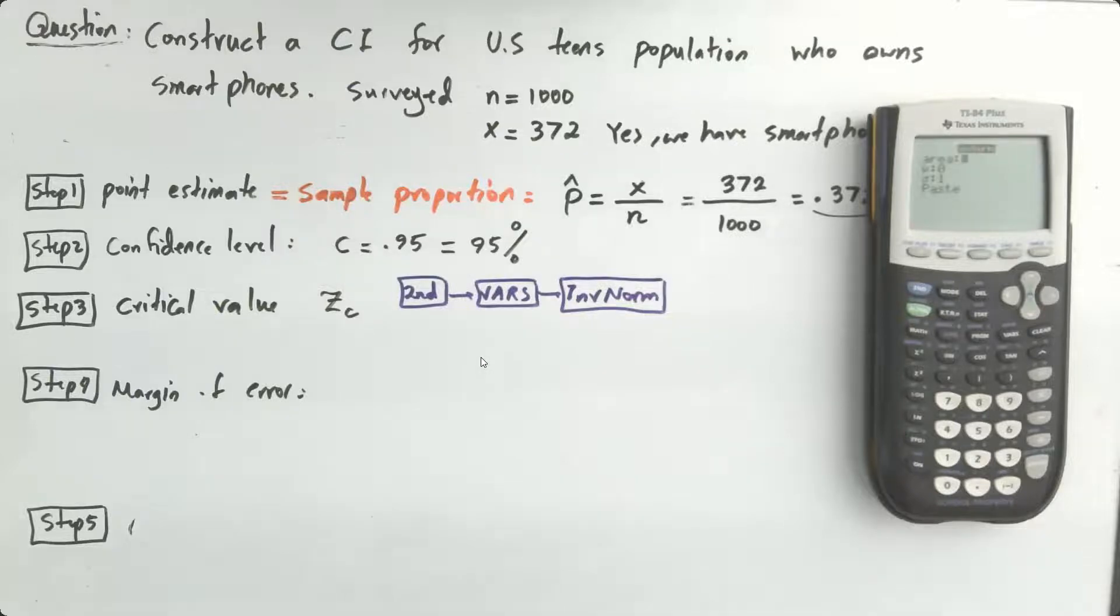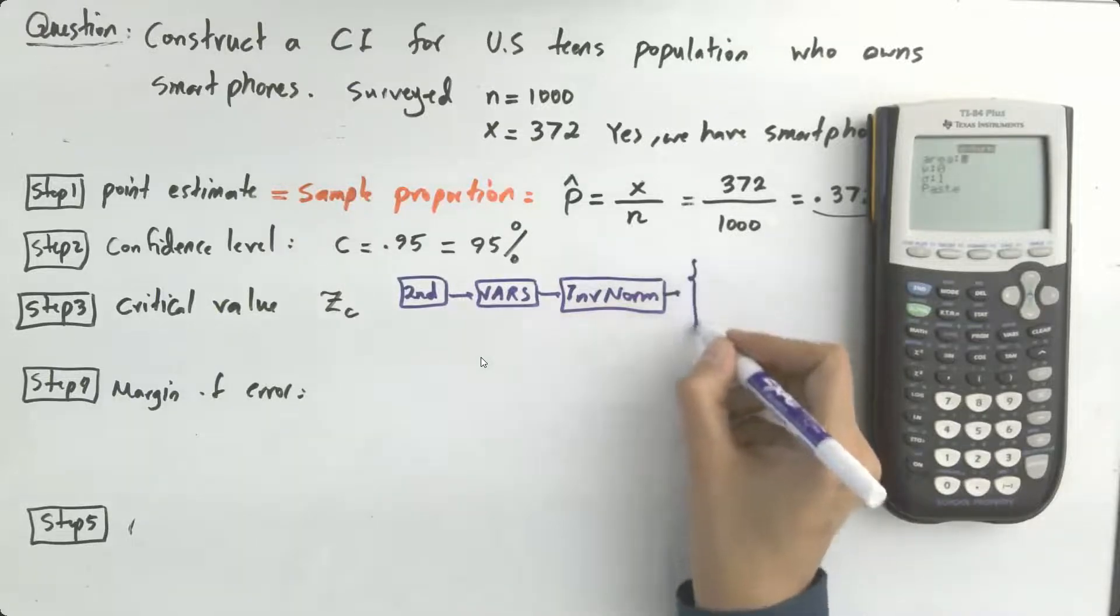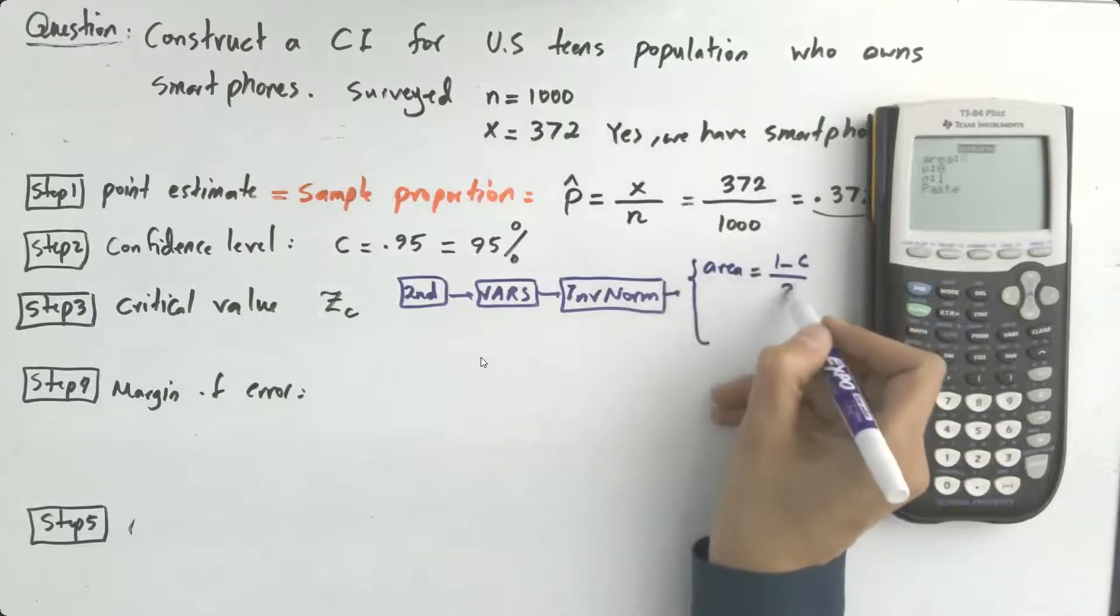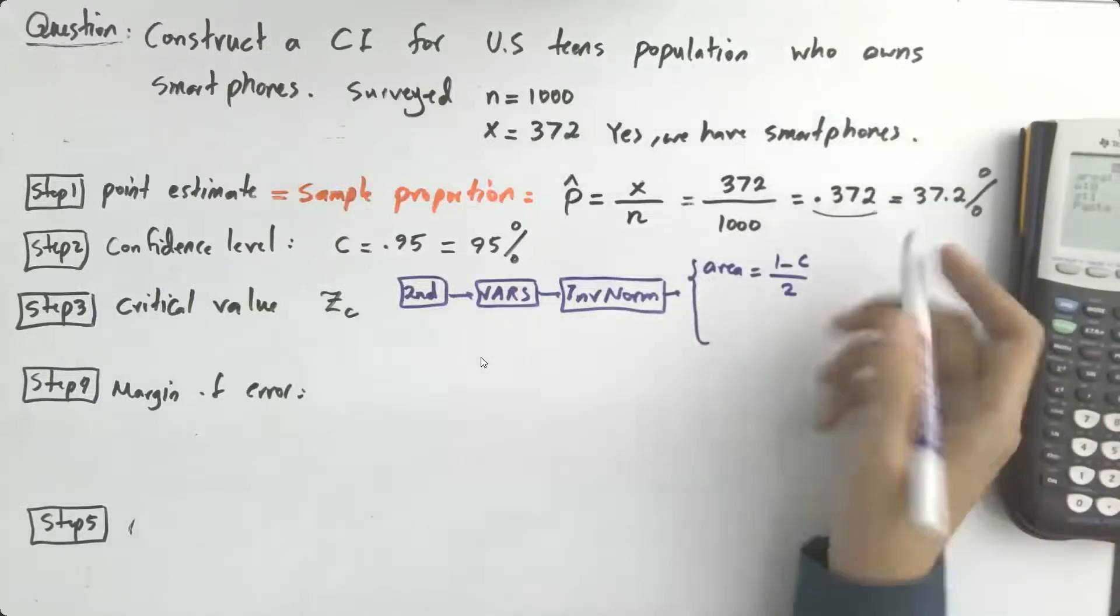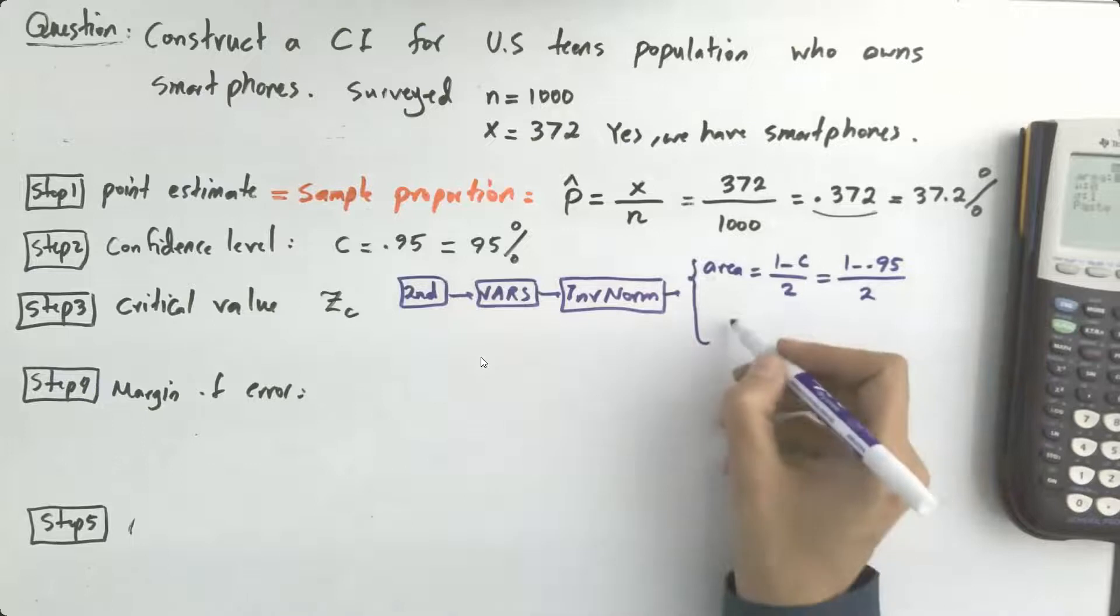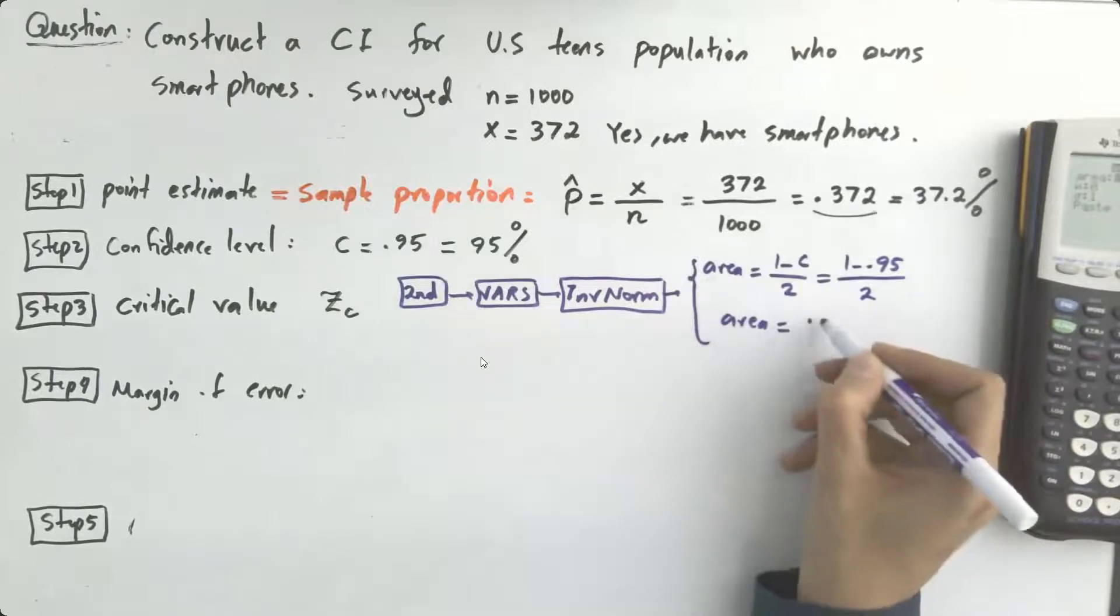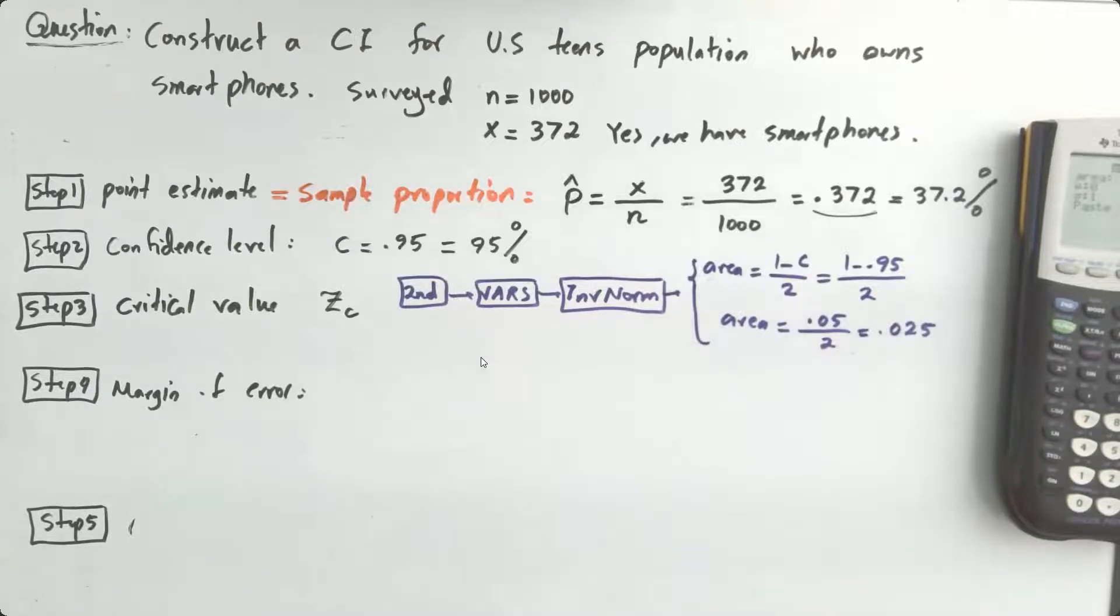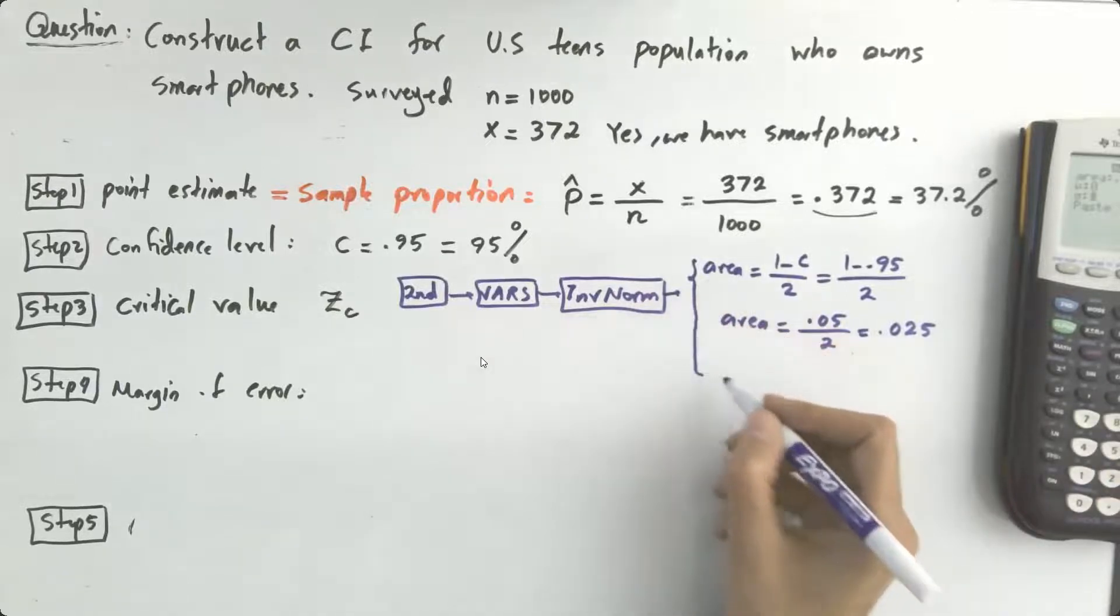What do I need? I need the area. I also have information about mean and the standard deviation. Thank you Christy, well done. So the area as usual is 1 minus c divided by 2, so c is 95 percent, 1 minus 95 percent divided by 2, or the area is 5 percent over 2, or 0.025.